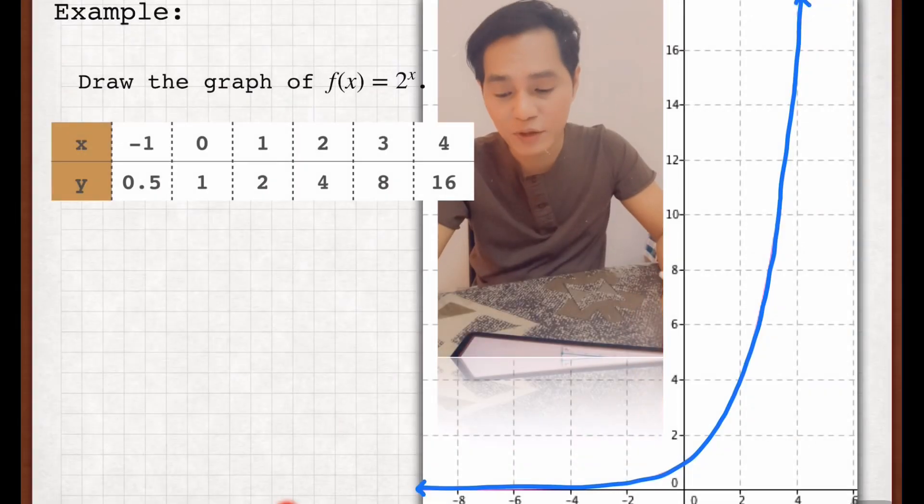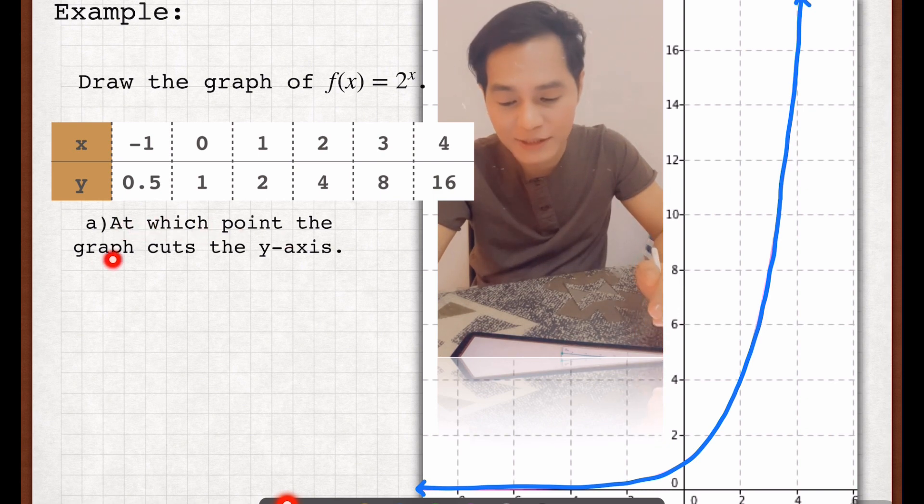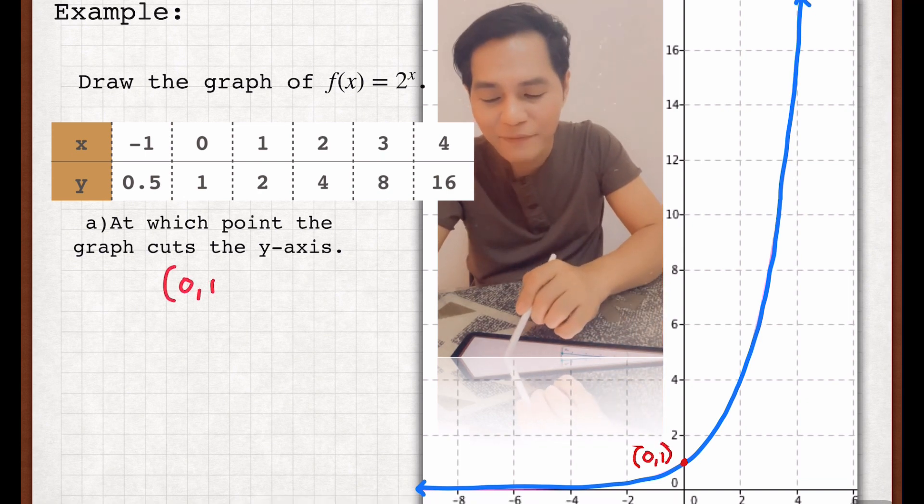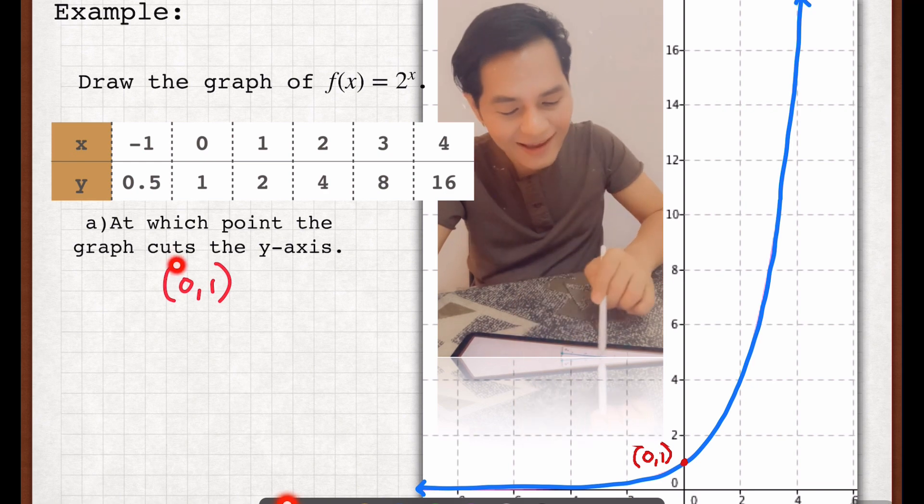So here's the next question: at which point does the graph catch the y-axis? Just simply look at the graph here and take a look at where it catches the y-axis. So here is the point, that is (0, 1), and that is the point in the graph that catches the y-axis.